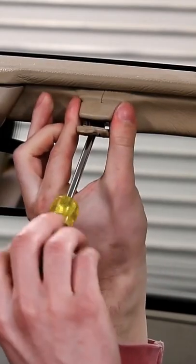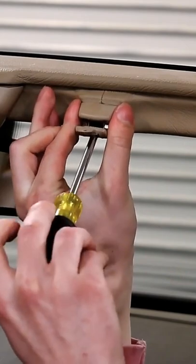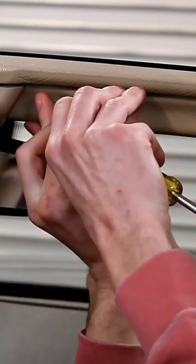This step requires a Phillips screwdriver. Loosen the screw and set it aside. You'll need it for the next step. Then remove the SunVisor clip from the vehicle.